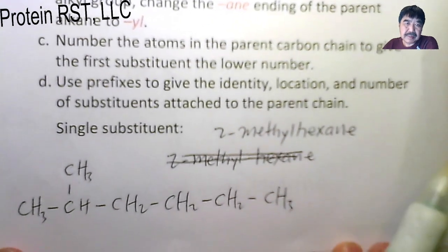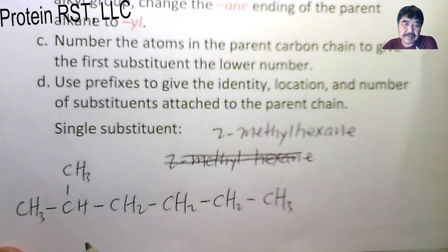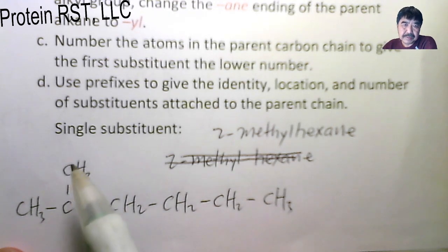Let's take a look at single substituents, this molecule. The parent chain has six carbons, so it's called hexane. At the two position, it's a methyl group. It's called 2-methyl hexane.